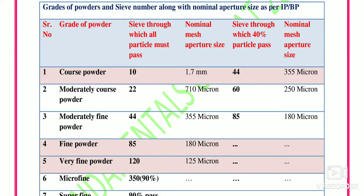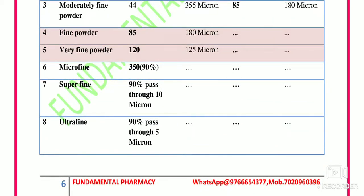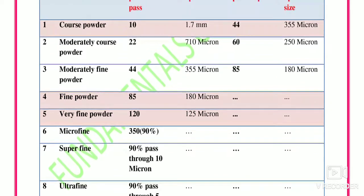If all particles pass through sieve number 44 and 40% pass through sieve number 85, the powder is known as moderately fine powder. For fine powder, all particles must pass through sieve number 120. If all particles pass through sieve number 120, the powder is known as very fine powder. The definitions of fine powder and very fine powder are important — please remember them.